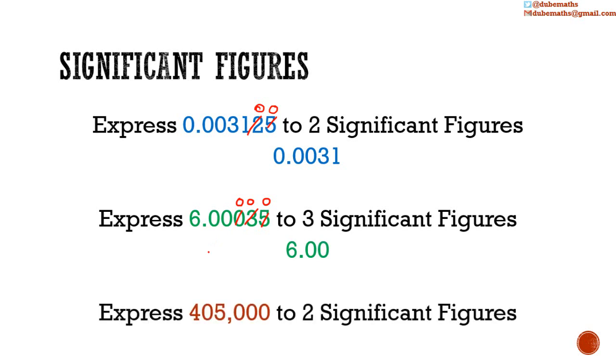And one final example. We have to express 405,000 to two significant figures. The first two significant figures are 4 and 0, so all the others have to be zeroed, so this 5 would be zeroed, and the others are already zero. The first number that was zeroed is a 5, which is 5 or greater, so we add 1 to the 40. So zero plus 1 is 1, so we get 41. We have 410,000.